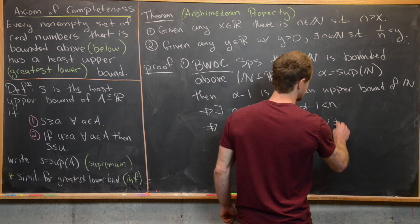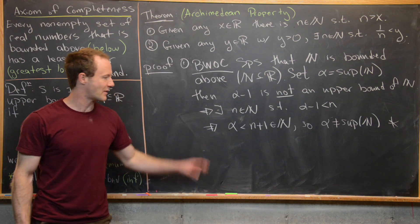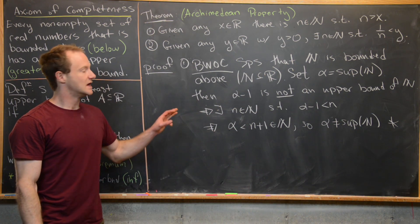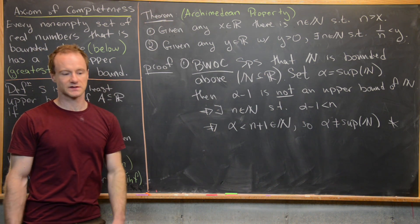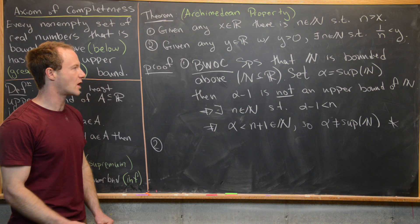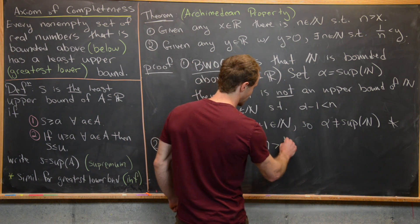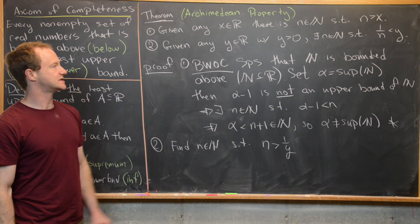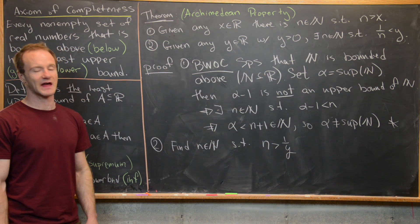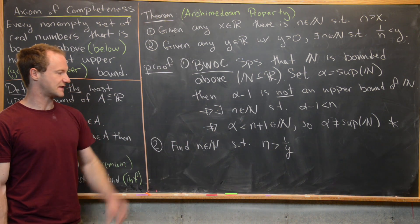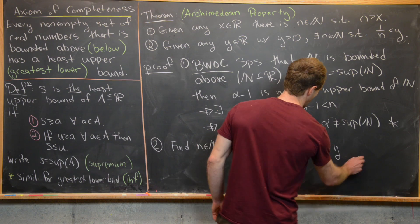This contradicts α being the supremum of ℕ, since we found a natural number larger than α. So the natural numbers are not bounded above, which proves part one. Part two follows very quickly: given Y > 0, take its reciprocal 1/Y, which is a real number. By part one, find N ∈ ℕ with N > 1/Y, then taking reciprocals gives 1/N < Y, which is exactly what we wanted.